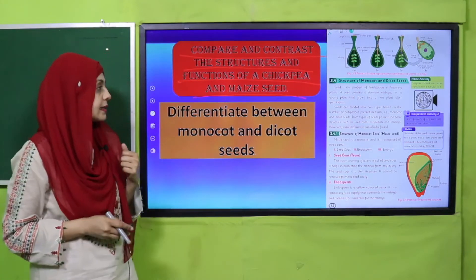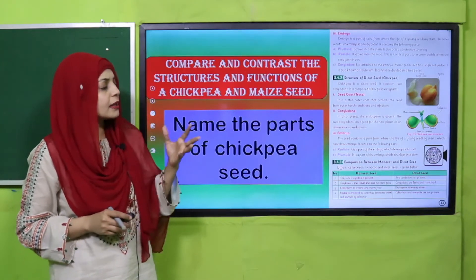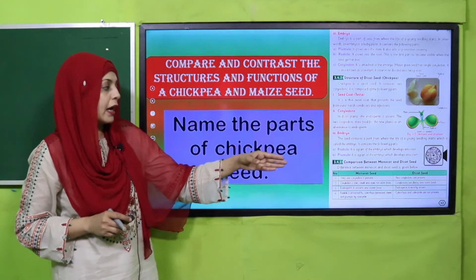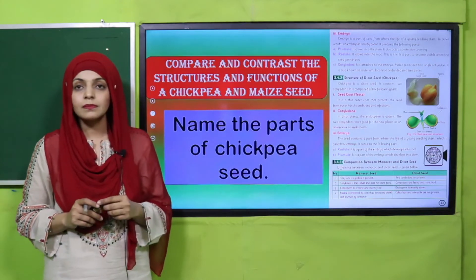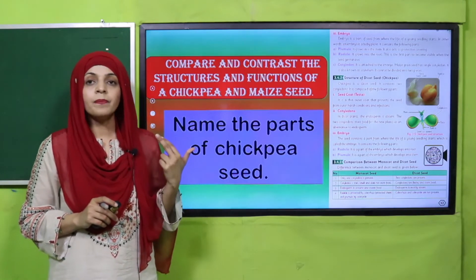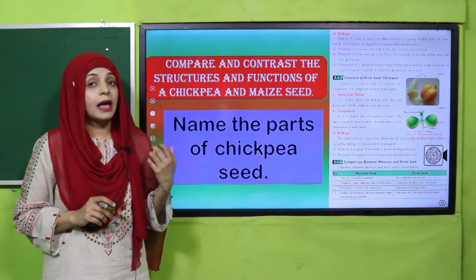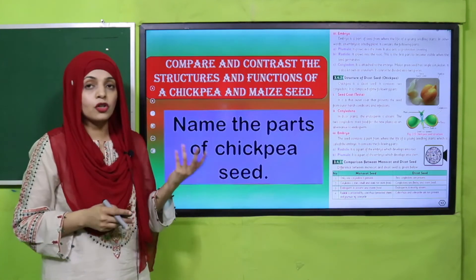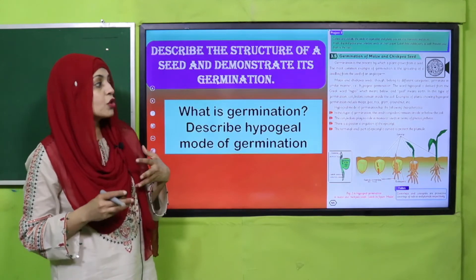Very good, excellent. Now we will move forward. Humne monocot aur dicot seeds ke darmiyan difference padha tha. Name the parts of chickpea seeds — that is embryo, testa, plumule, radicle, cotyledon, and epicotyle. These are the parts of a dicot seed or a chickpea seed.